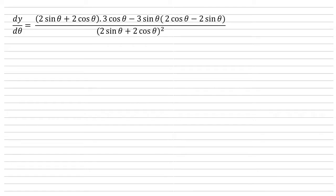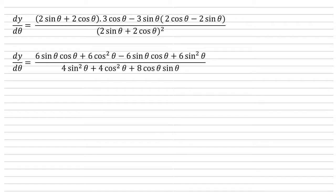We're going to expand the top and the bottom, multiplying those brackets out to give us 6 sine theta cos theta plus 6 cos squared theta minus 6 sine theta cos theta plus 6 sine squared theta, and that's all over 4 sine squared theta plus 4 cos squared theta plus 8 cos theta sin theta.